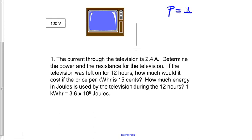Again, power is equal to I times V, so our power is then going to be equal to a current of 2.4 amps multiplied by 120 volts. That comes out to be 288 watts.